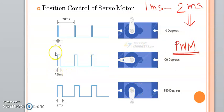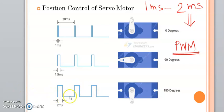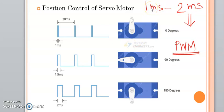For a T-on period of 1.5 ms, the servo motor can be rotated by 90 degrees. A pulse-on duration of 2 ms means 2 ms on and 18 ms off. Accordingly, you can set the duty cycle to rotate the servo motor to 180 degrees. To achieve different angles from 0 to 180 degrees, you need to provide pulses with T-on duration changing from 1 ms to 2 ms.